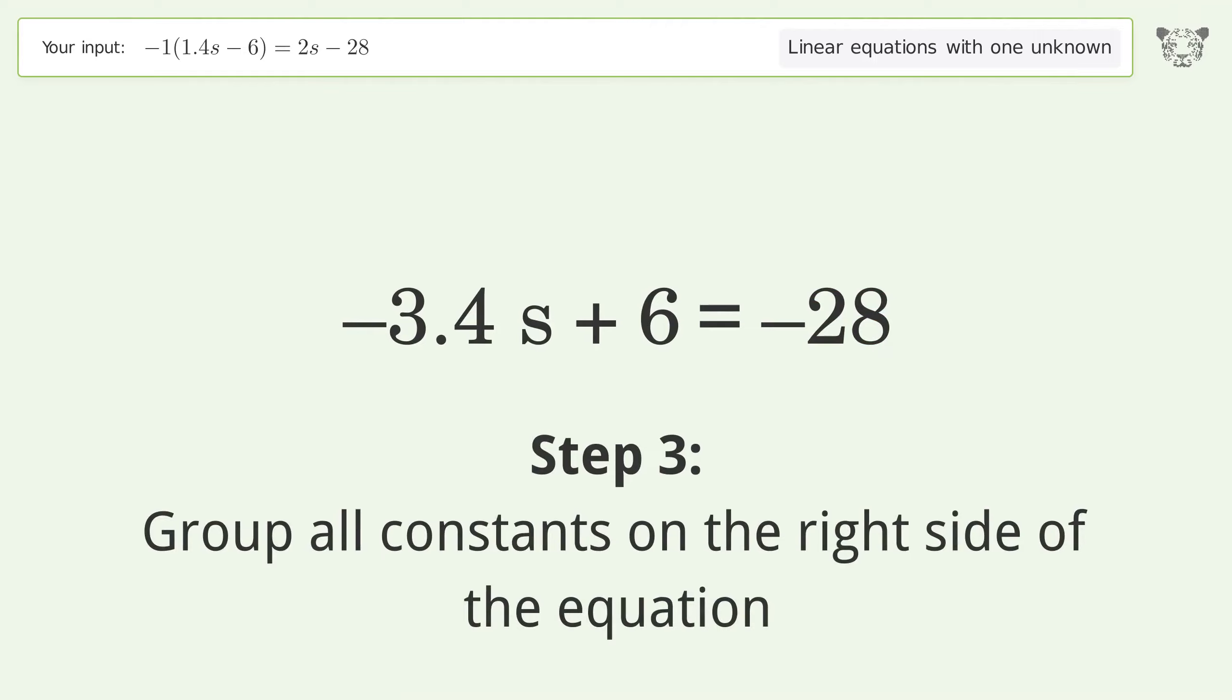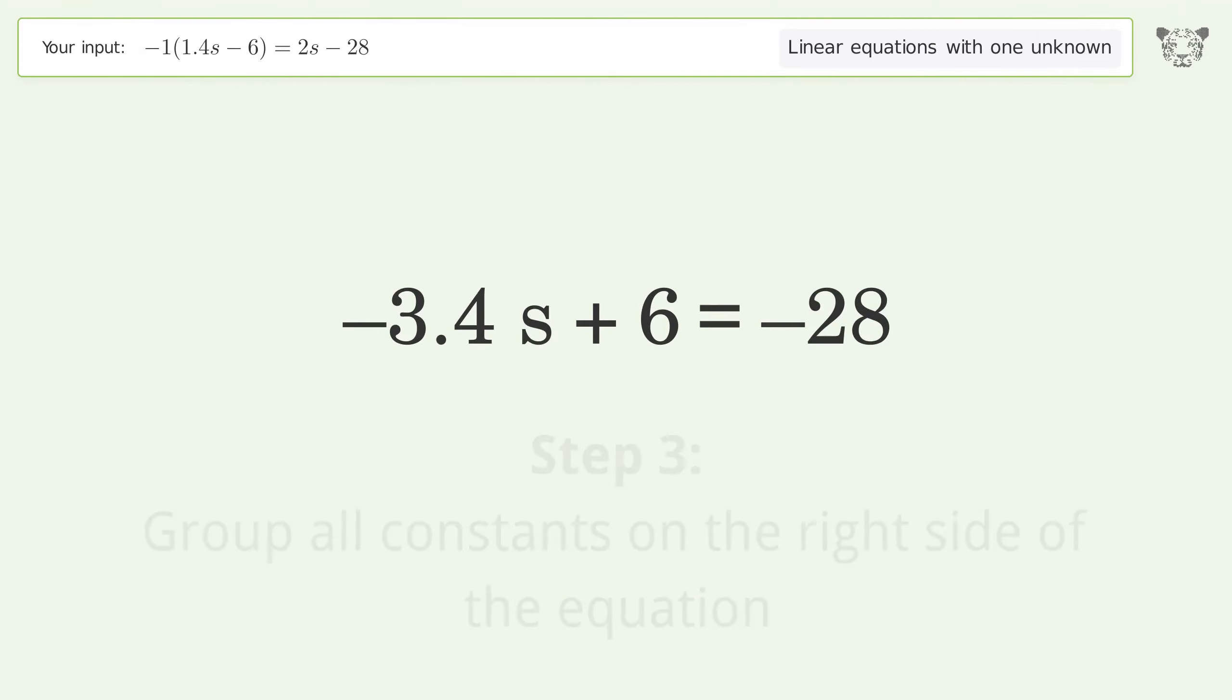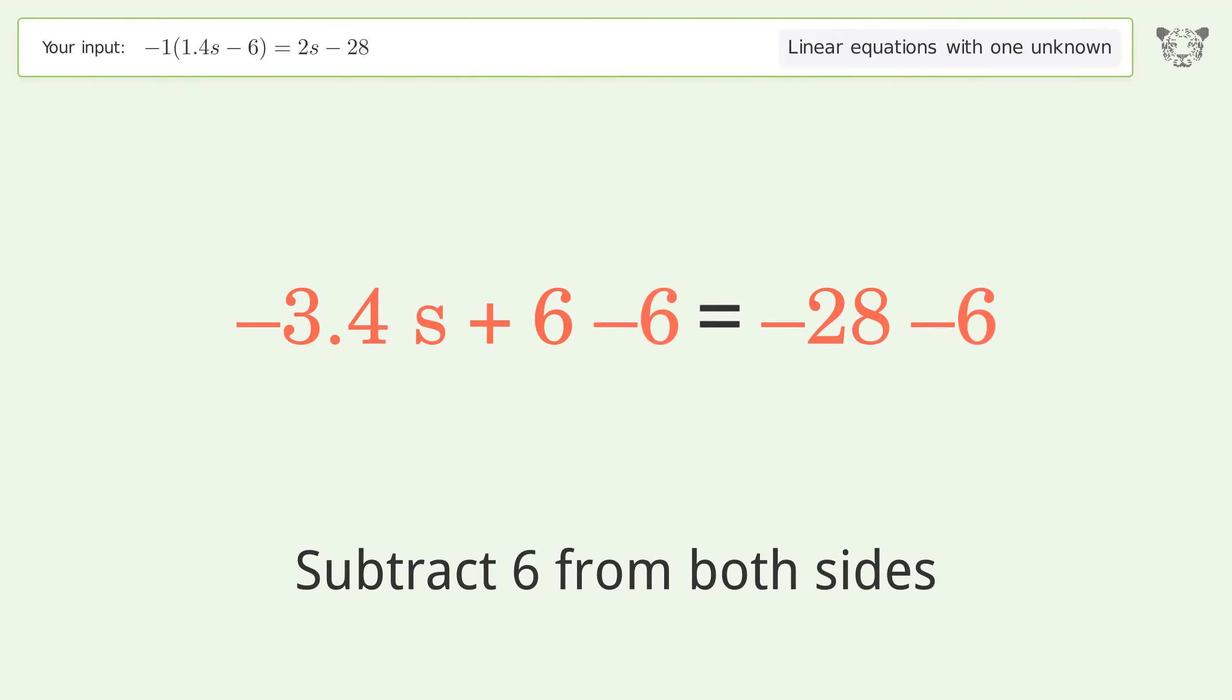Group all constants on the right side of the equation by subtracting 6 from both sides. Simplify the arithmetic.